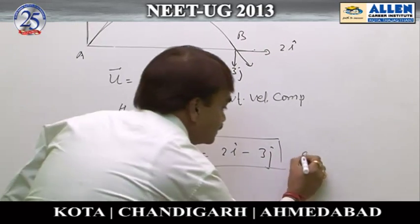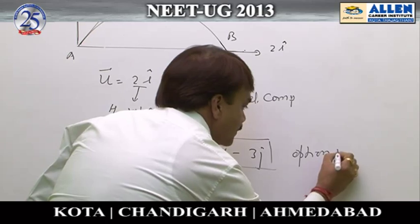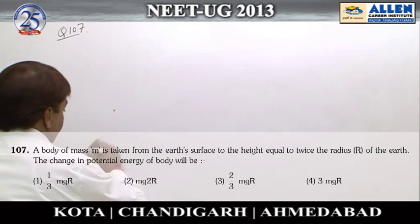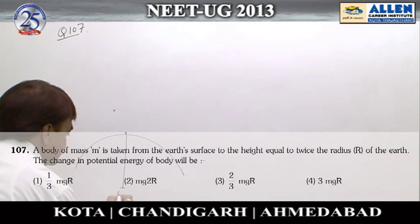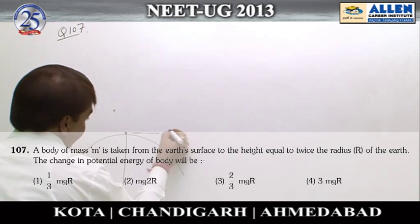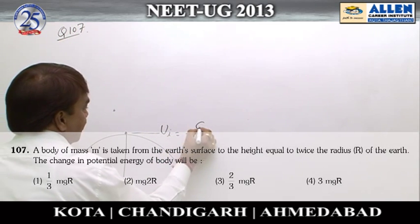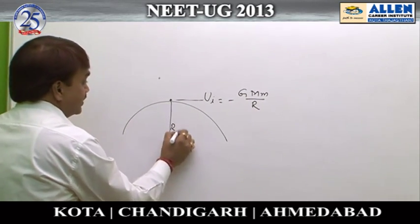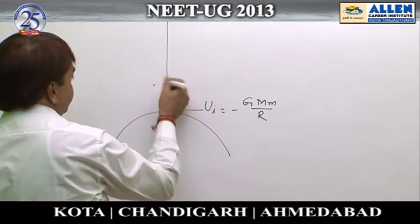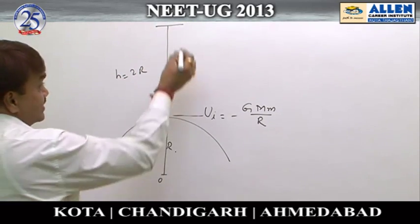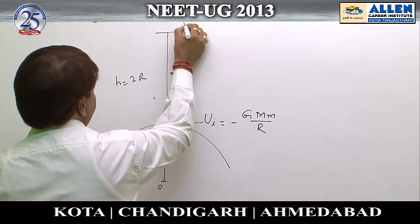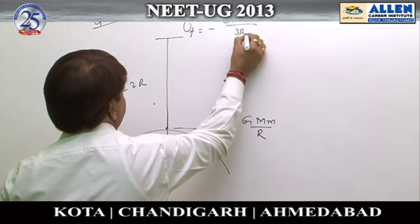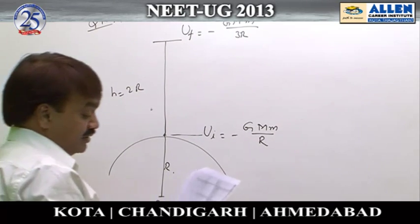Question number 107: a body is placed at the Earth's surface, and its gravitational potential energy at the initial point is -GmM/R, where capital R is the radius of the Earth. According to the question, the body is then placed at a height of 2 times the Earth's radius, so the final gravitational potential energy is -GmM/3R, since distance is always measured from the center of the Earth.